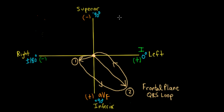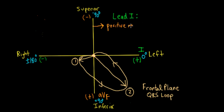We're going to use this loop to predict what the QRS complex will look like for lead 1. We take the perpendicular lead — AVF — and consider that to be the isoelectric line, electrically zero. Since the positive pole of lead 1 is on the right, any part of the loop on the right side of lead AVF is a positive recording. On the left side, near the negative pole of lead 1, it's a negative recording. Anything that crosses AVF is zero.